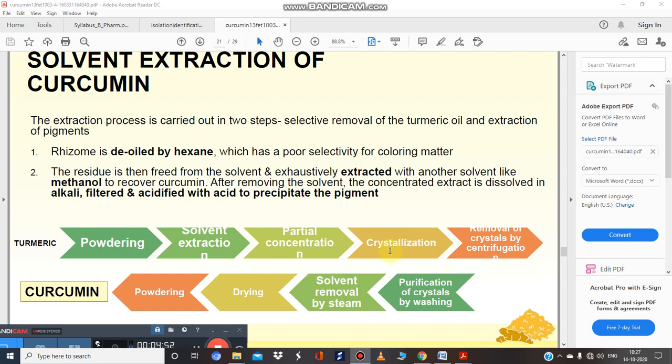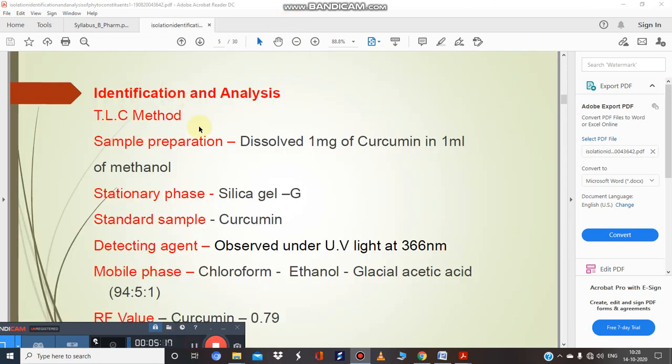Using an appropriate solvent for crystallization, then removal of crystals by centrifugation, wash or purify the crystals by washing, remove the solvent, dry it, and you'll find curcumin in powder form. For identification and analysis, use TLC studies.